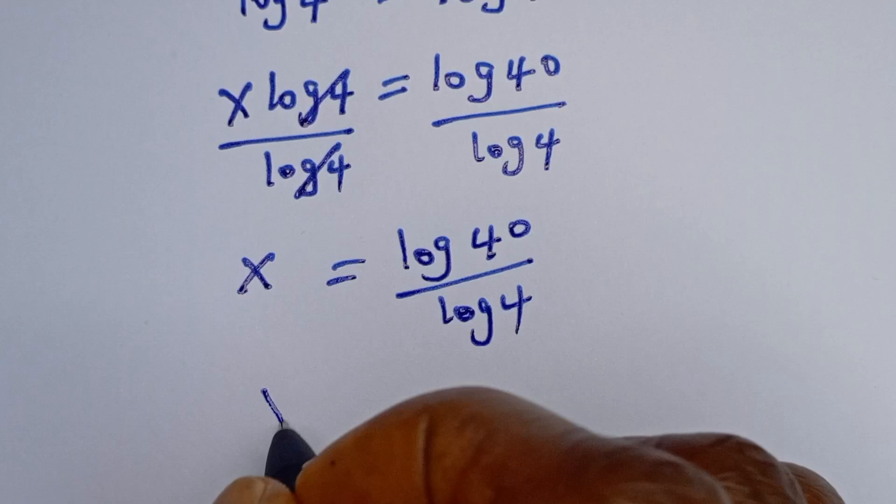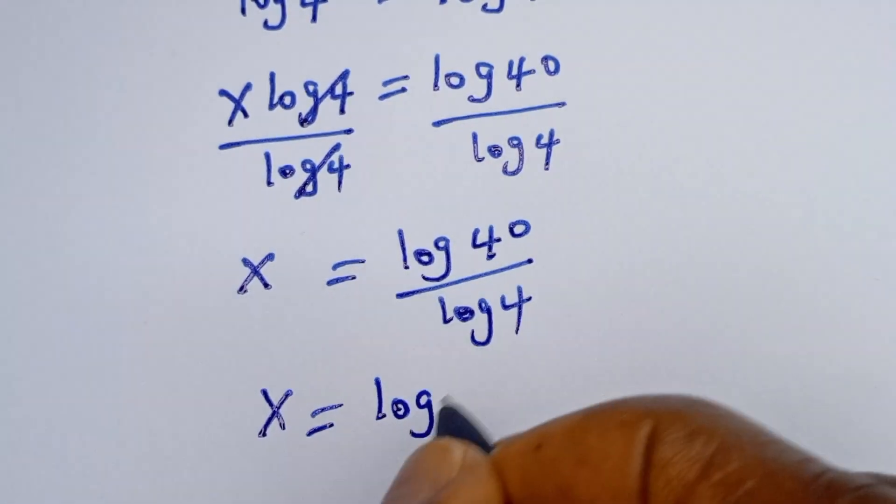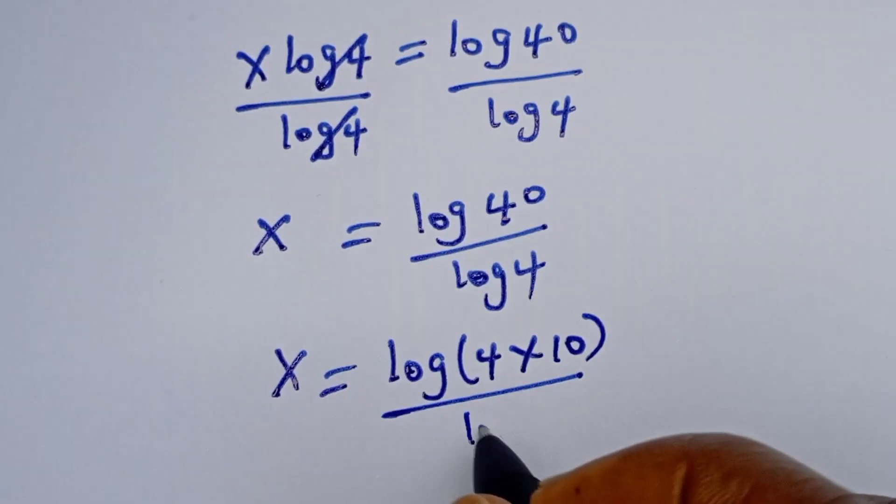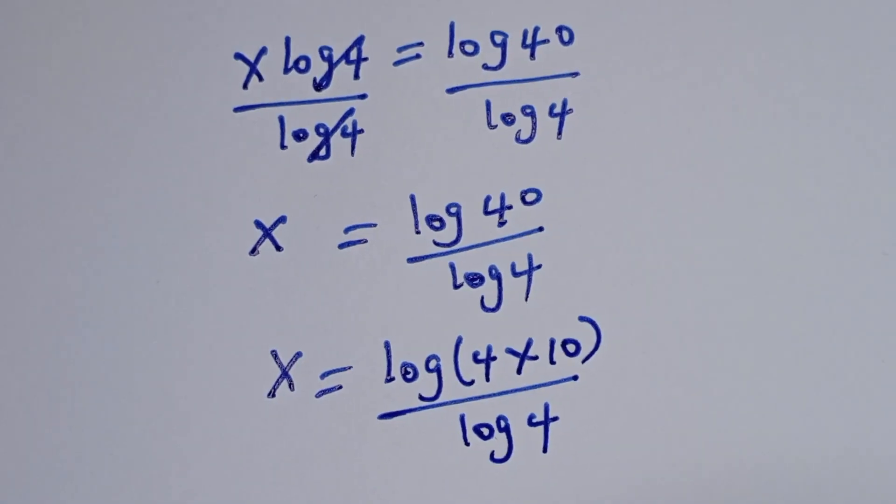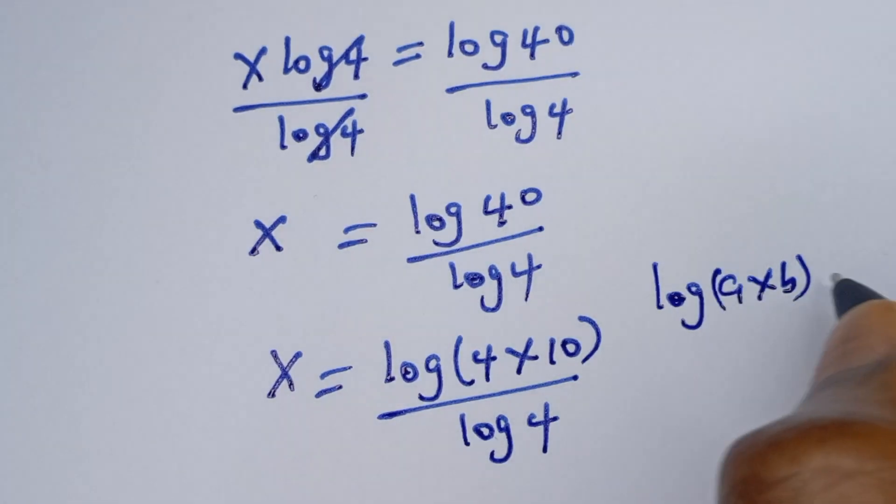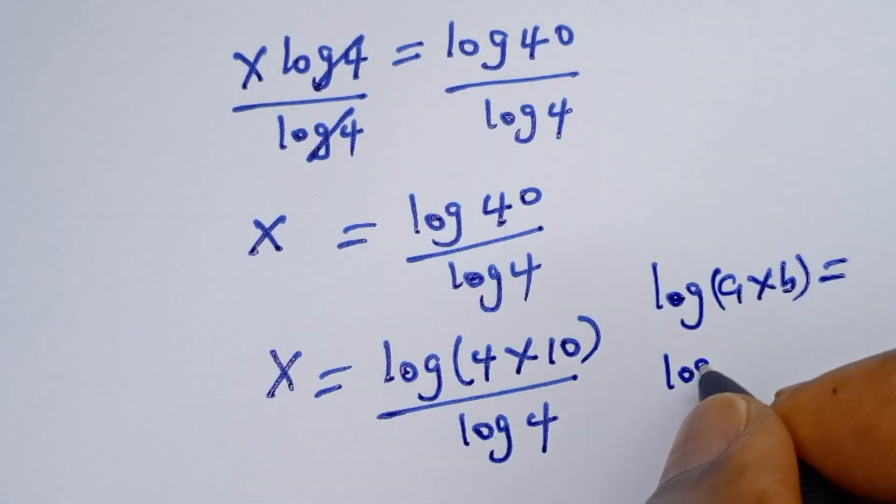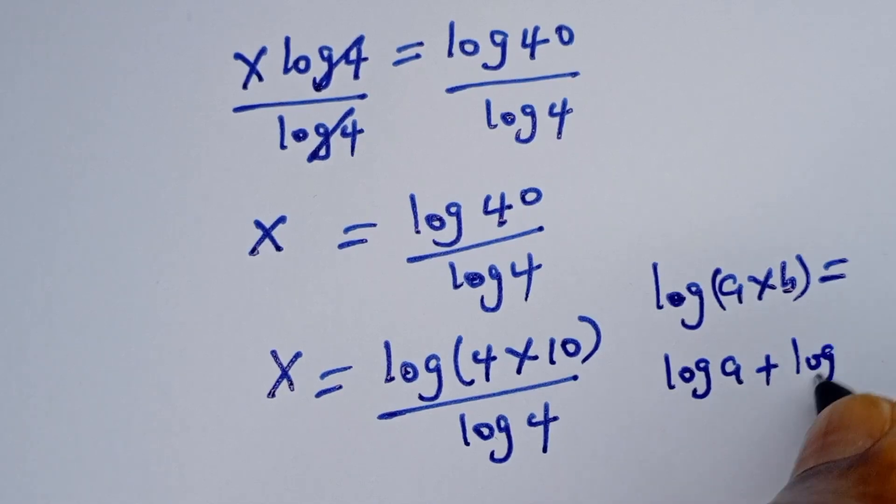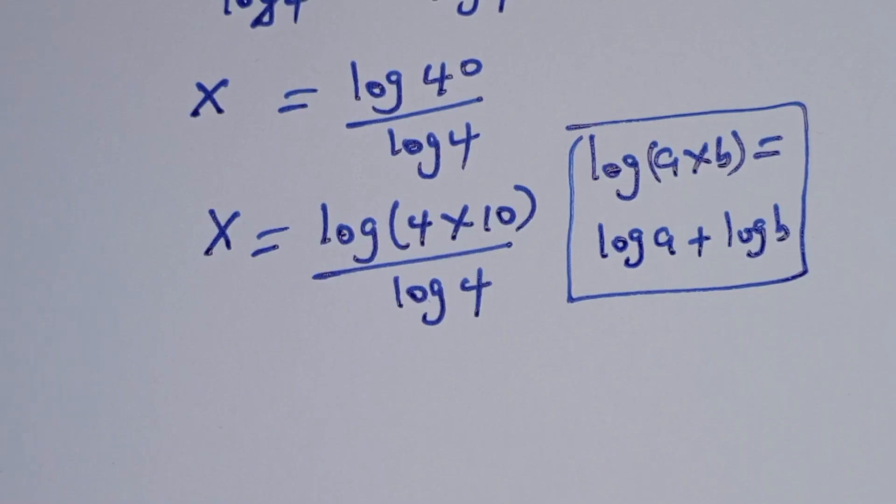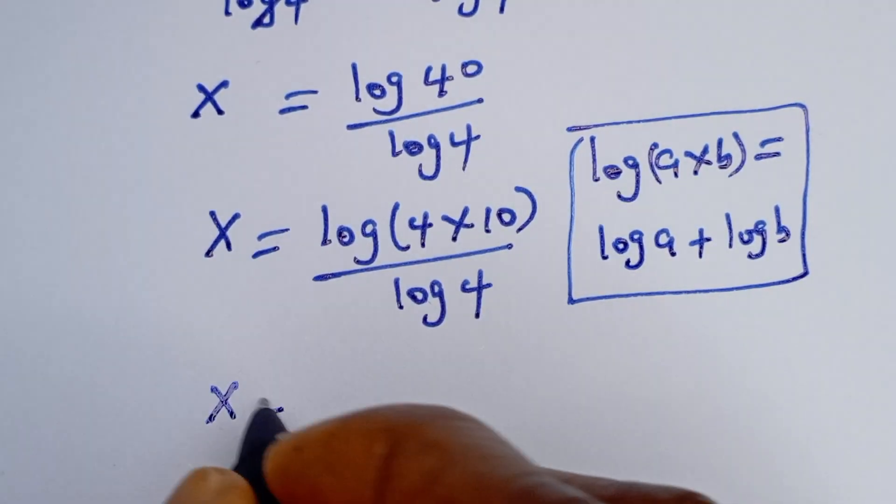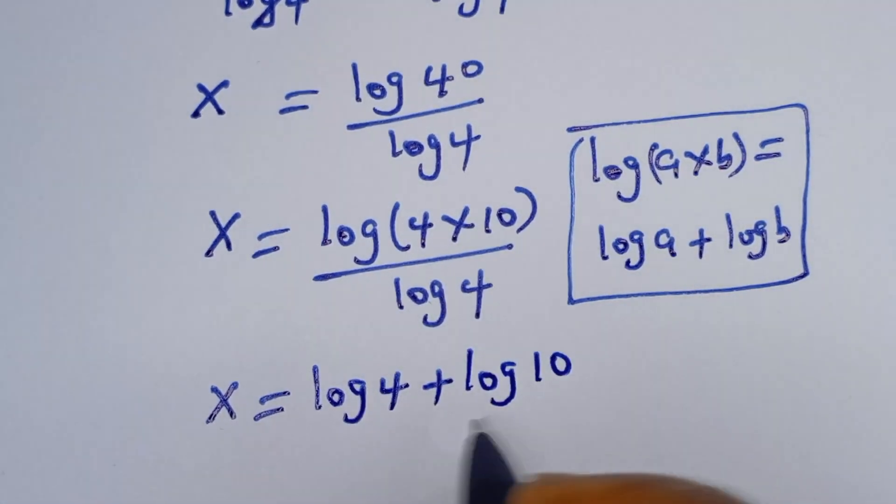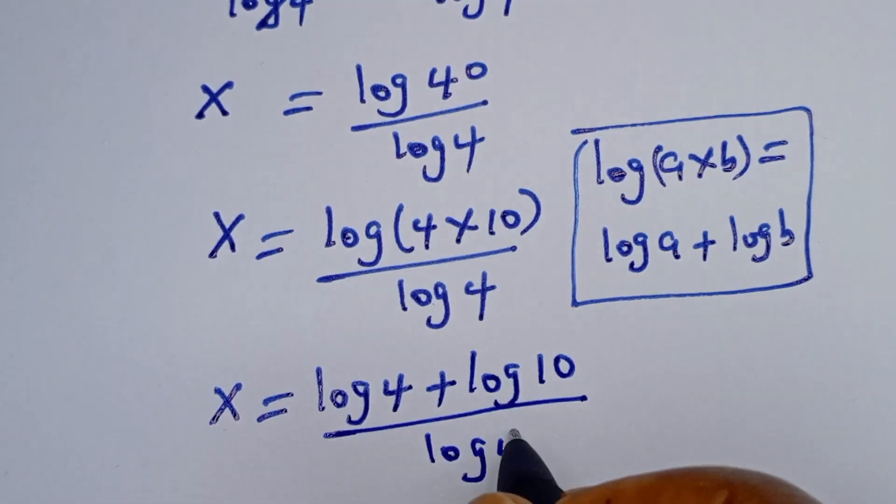Now x is equal to log 40, which can be written as log of 4 multiplied by 10, divided by log 4. Now take note of this: if you have log a multiplied by b, this is equal to log a plus log b.